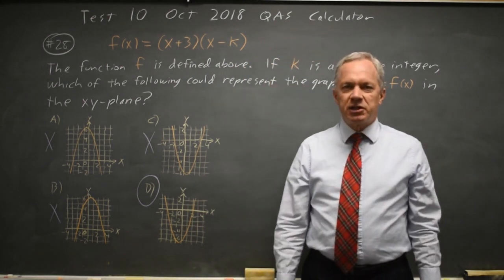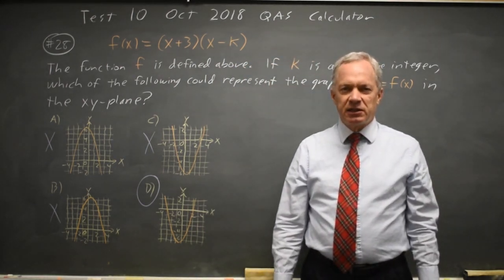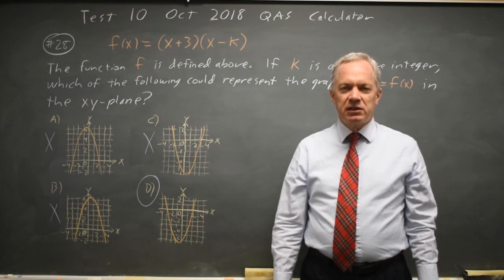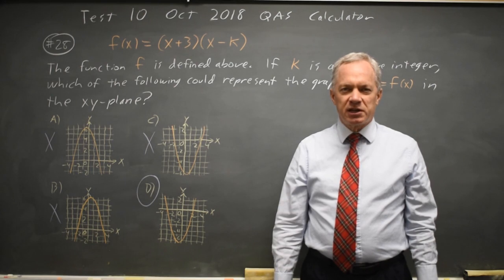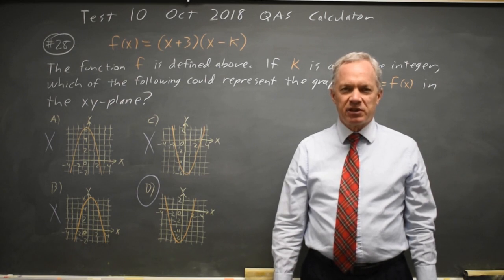All we needed to do there was check whether it opens up or down and check the zeros, and that's sufficient to rule out 3 of the 4 choices. College Board often asks about the vertices, x-intercepts, or y-intercepts of a quadratic, and it's important to recognize the relationship between the factors and the zeros, and also whether the leading coefficient is positive or negative, and how that relates to whether the quadratic opens up or down.